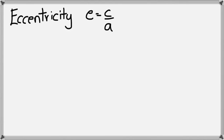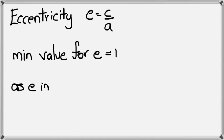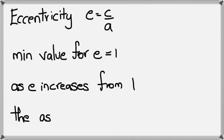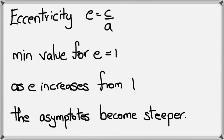So with eccentricity, just like the ellipse, the formula is going to be e is c divided by a. The one thing you need to know is that minimum value for e will always be 1. And as e increases from 1, what happens is the asymptotes, they actually become a lot more steeper. So if your e is greater than 1, then your hyperbola is, I don't know how you say it, if I can just show you a quick sketch of it.